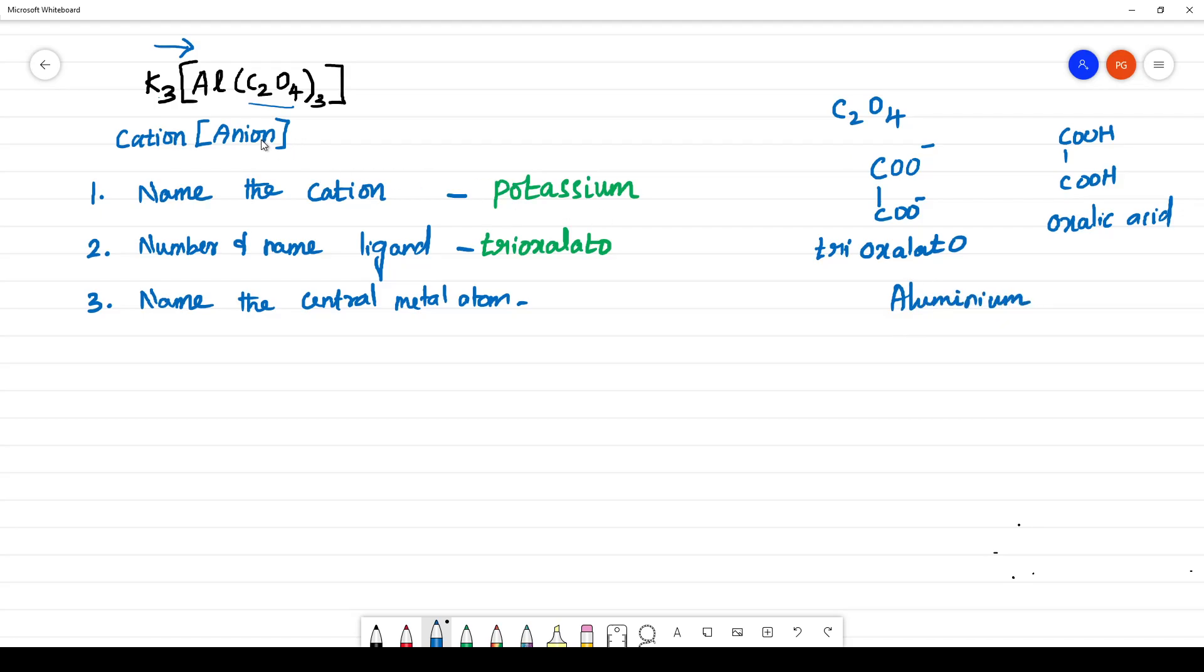If the complex is anion, the central metal atom is in the anionic complex. If the complex is anion, it should end with -ate. Remember, it should end with -ate. That means aluminium should end with -ate. You have to write aluminate. The complex is an anion, it should end with -ate. But if the complex is cation, you will be writing the same name aluminium. No need to add the suffix -ate.